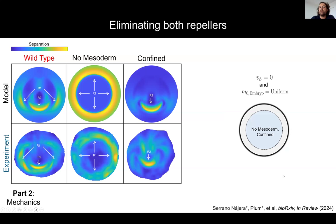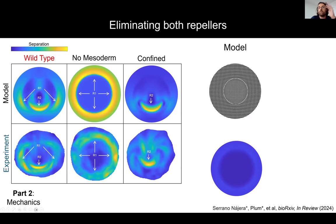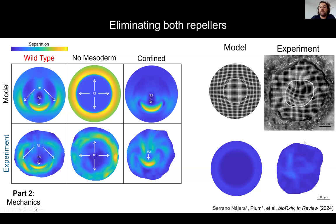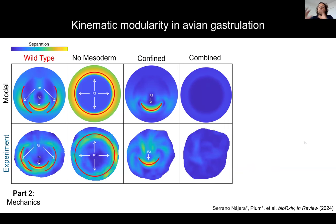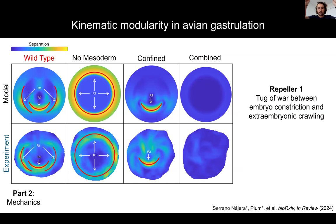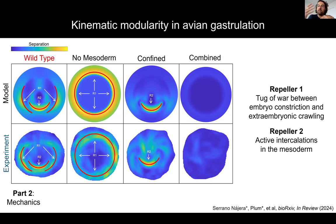The combined perturbation — blocking both epiboli and mesoderm — eliminates both repeller two and repeller one together in model and experiments. We learned that repeller one arises as a tug-of-war between extraembryonic epiboly and apical constriction, while repeller two arises from active intercalation of the mesoderm. These two kinematic modules can be modulated and controlled independently in vivo.